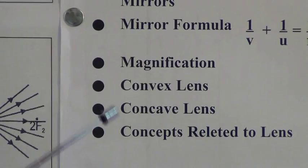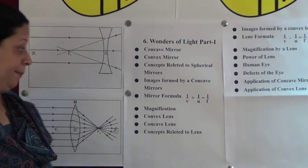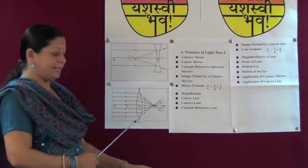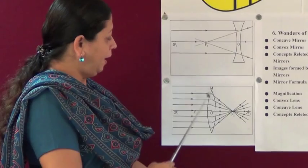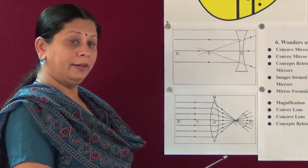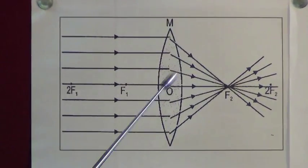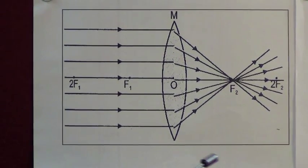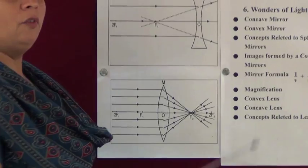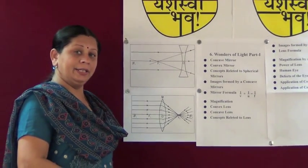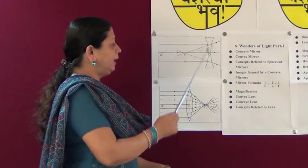Now let us see what lenses are. A lens is a transparent material bound by two surfaces, out of which one is spherical. What is a convex lens? A convex lens is made of transparent material bound by two spherical surfaces and is thicker at the middle than at the edges. What is a concave lens? A concave lens is the lens whose surfaces are curved inside; the edges are thicker than the middle part.